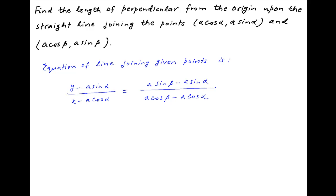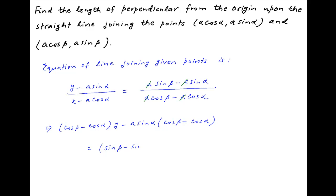On the right hand side, a cancels across the numerator and the denominator. Cross multiplying, we get: (cos β minus cos α) times (y minus a·sin α) times (cos β minus cos α) is equal to (sin β minus sin α) times (x minus a·cos α) times (sin β minus sin α).